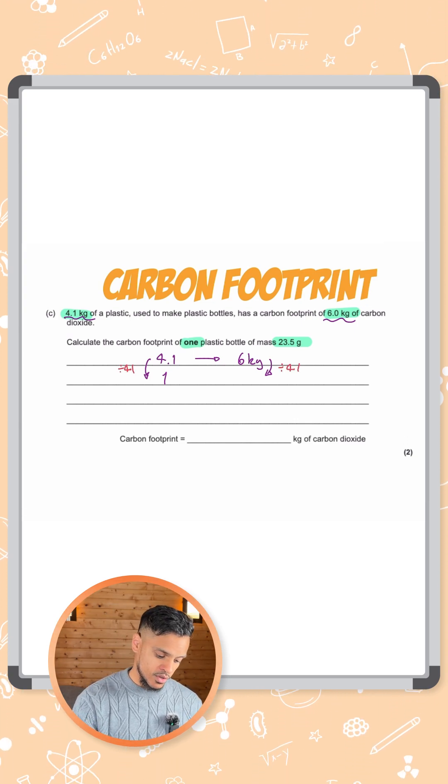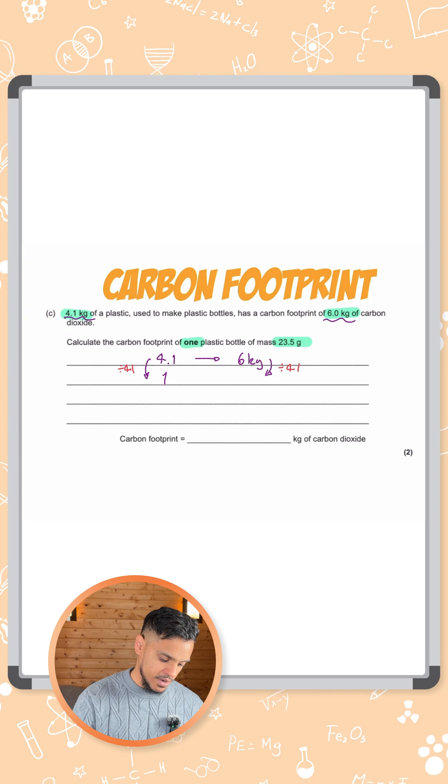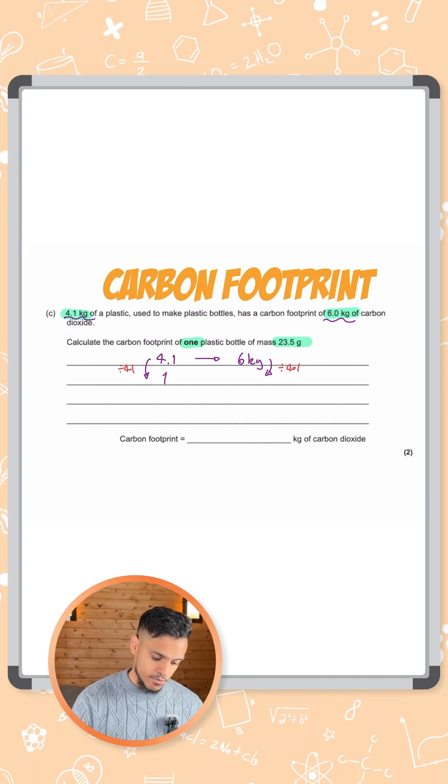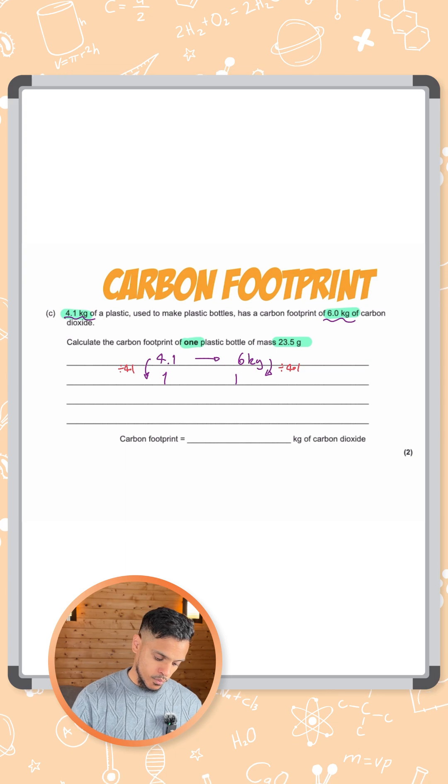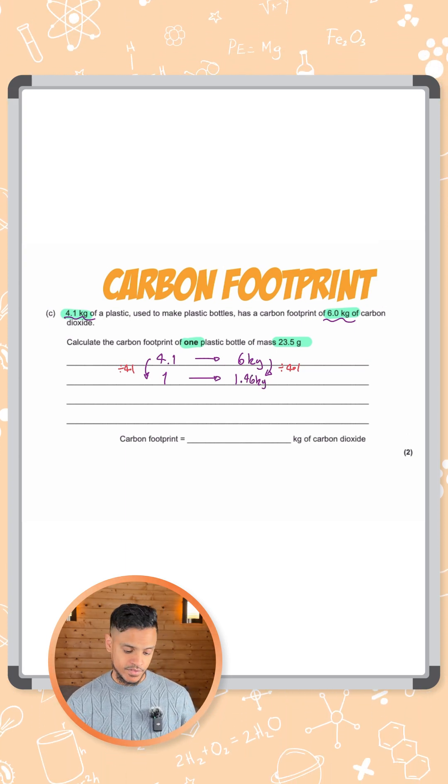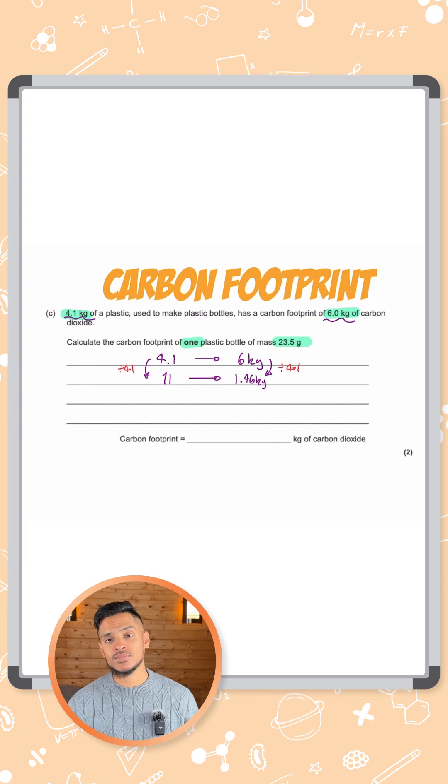4.1 divided by 4.1 equals 1. If we do 6 divided by 4.1, that gives you an answer of 1.46. So that tells us 1 kilogram of plastic gives us 1.46 kilograms of carbon dioxide.